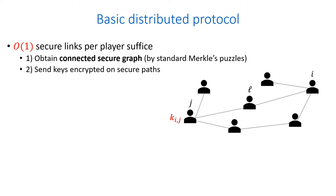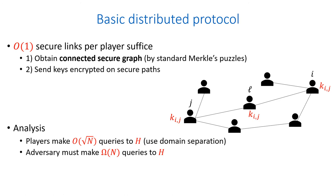Now, each pair of players that wants to share a secret key can do so by encrypting the key and sending it over a secure path. In this example, if player j wants to share a secret key with player i, it can encrypt the key and send it to l, which then encrypts it with its shared key with i and sends it to player i. In this basic protocol, each player makes square root of n queries to the random oracle, and an adversary that wants to recover a key still makes omega of n queries to the random oracle.